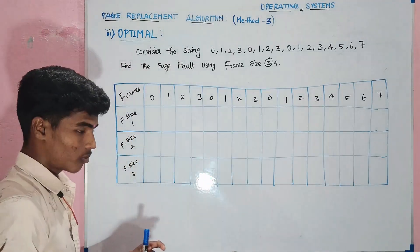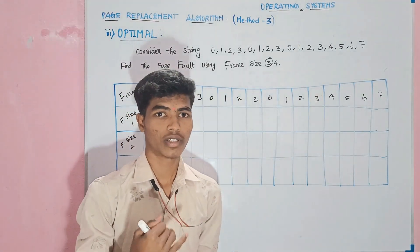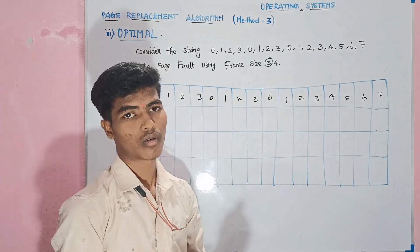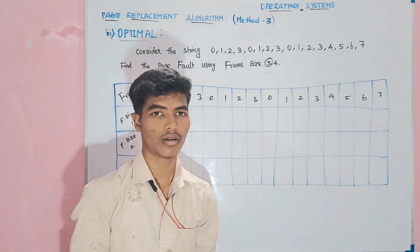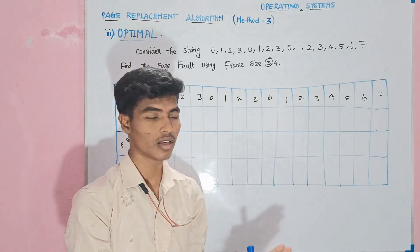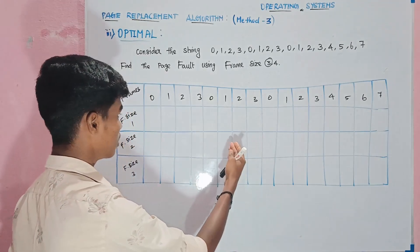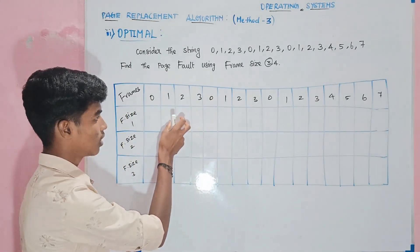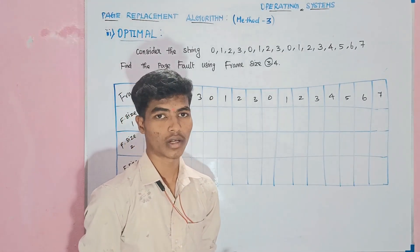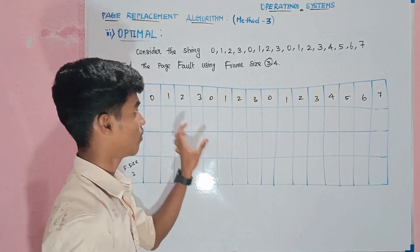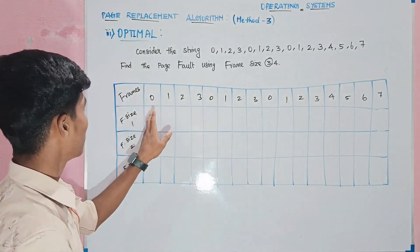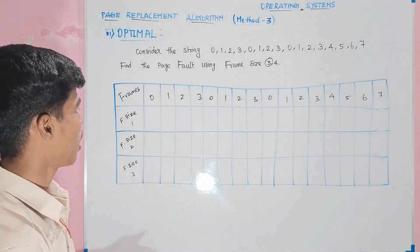Now we have to use the First In First Out process — first priority is the first string, that is First In First Out. Then we check the Least Recently Used. If we have to use the string, we will insert the value. Then comes the Optimal Page Replacement Algorithm.